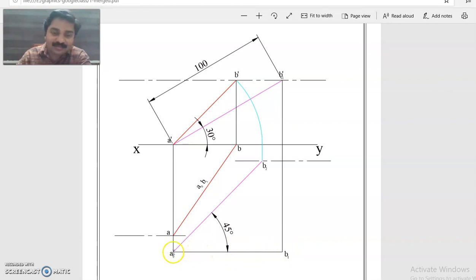Here itself we are drawing the true length at an angle of 45 degrees, being the angle made by the line with VP. Now its front view length will be equal to this much, A dash to this much.